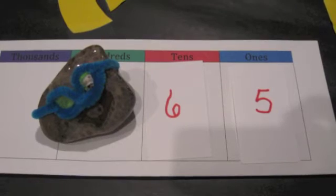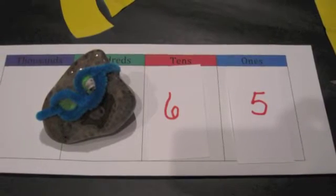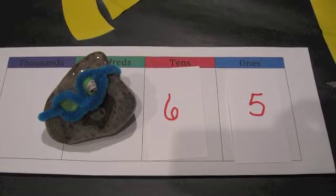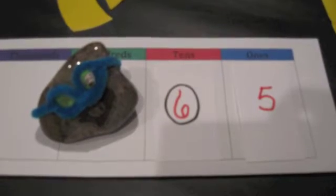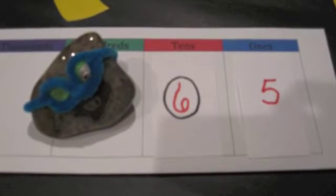Let's try that again. Let's take the number 65 and round it to the nearest ten. First, we circle the digit to be rounded. In this case it is a six.